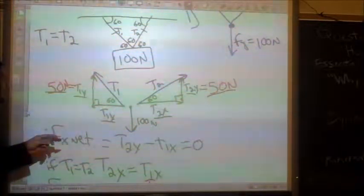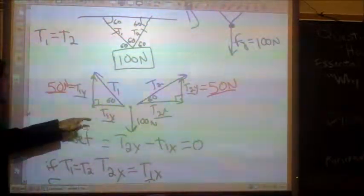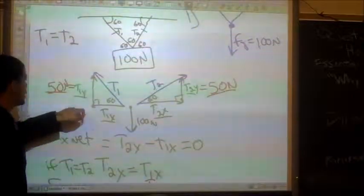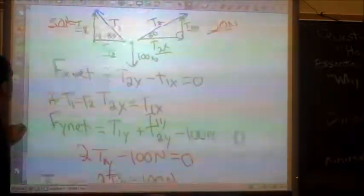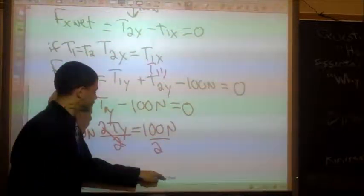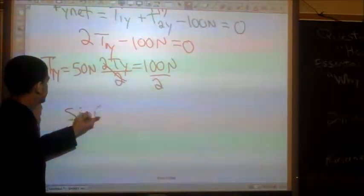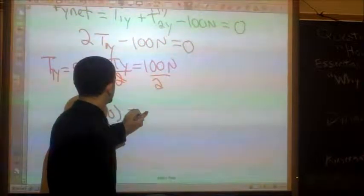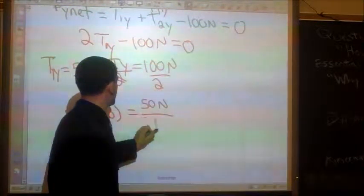So now, we want t1, and so now we can just use trigonometry because we have a side, and we have an angle. And so in this case, we want to use sine because sine is opposite over hypotenuse. So sine of 60 equals 50 newtons divided by t1.